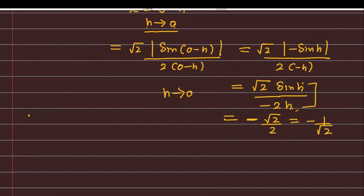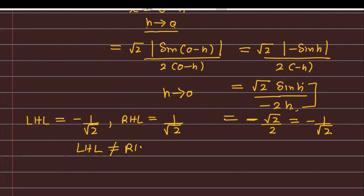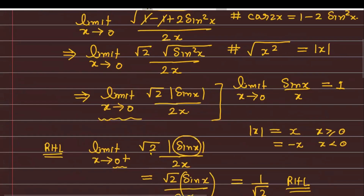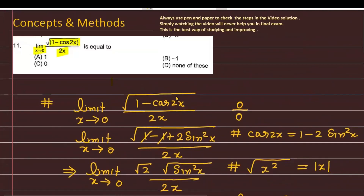तो यहाँ पर आप easily check कर सकते हैं: function की left hand limit है −1/√2 और right hand limit है 1/√2. Left hand limit is not equal to right hand limit, so we have to claim: the limit does not exist. तो इसमें answer न तो 1 है, न −1 है, न 0 है — the answer is none of these.